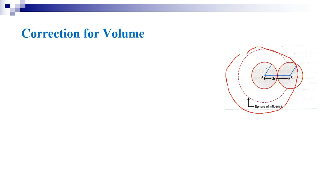The sphere of influence is drawn by taking a radius of 2R centered on the molecule. Here, molecule A with radius R is shown, and by taking twice the radius we draw the sphere of influence. No other molecule can penetrate inside this sphere of influence. Therefore, this volume is unavailable for other molecules inside the vessel, leaving a lesser volume for movement compared to the total volume. Van der Waals considered this and made a correction for the volume term.